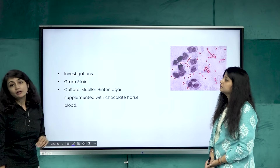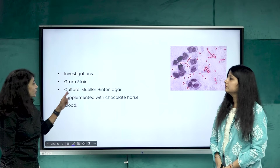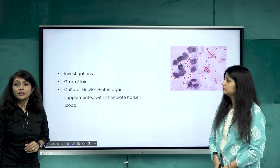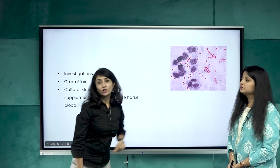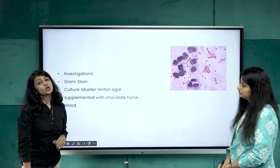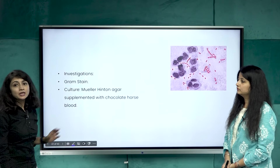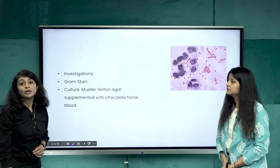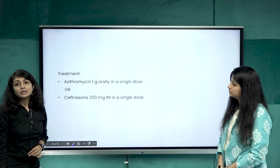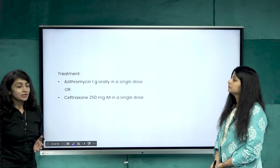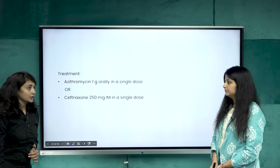An important investigation for chancroid is Gram stain. Haemophilus ducreyi is a gram-negative bacillus arranged in chains giving a school of fish or railroad track appearance. You can also culture the organism on Mueller-Hinton agar medium. Treatment is a single dose of azithromycin 1 gram or IM ceftriaxone 250 mg.